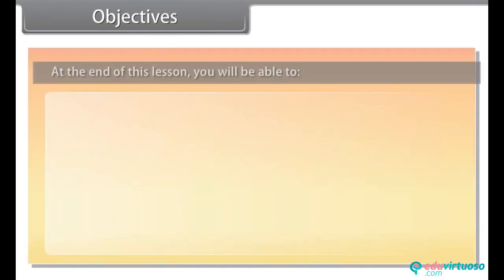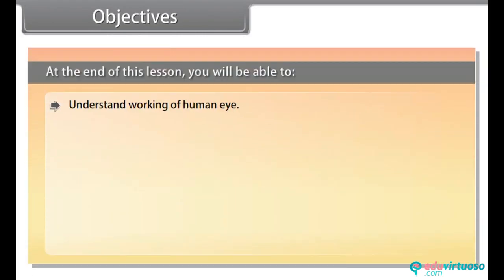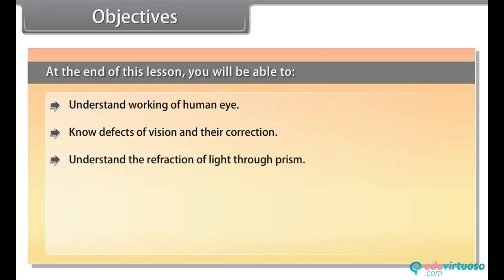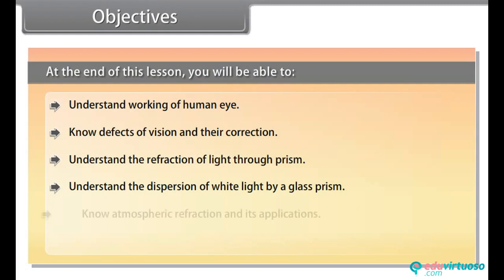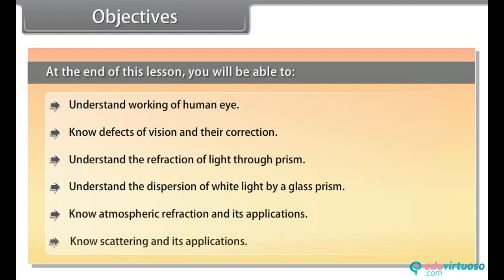Objectives: At the end of this lesson you will be able to understand the working of the human eye, know defects of vision and their correction, understand the refraction of light through a prism, understand the dispersion of white light by a glass prism, know atmospheric refraction and its applications, and know scattering and its applications.